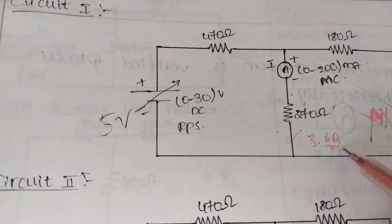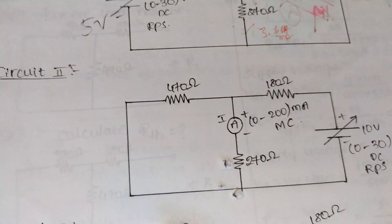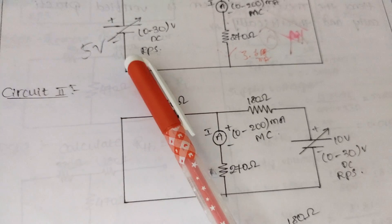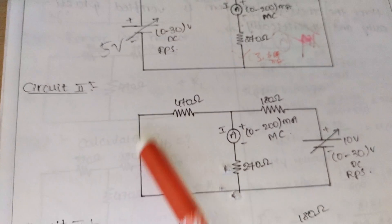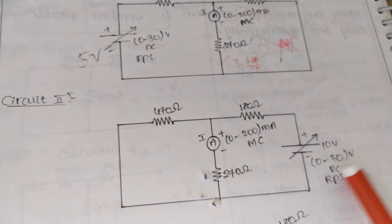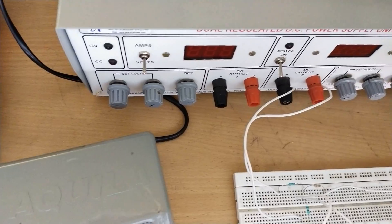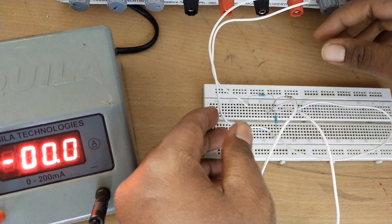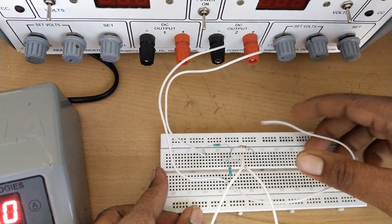The same circuit setup is now repeated for the 10 volt source by short-circuiting the 5 volt side. We deactivate the 5 volt source by connecting a wire across it. We switch off the supply and replace the short-circuited terminal with the 10 volt source connection.